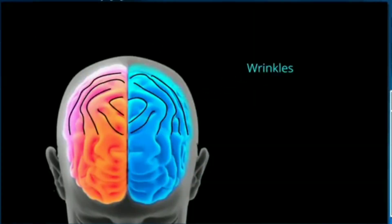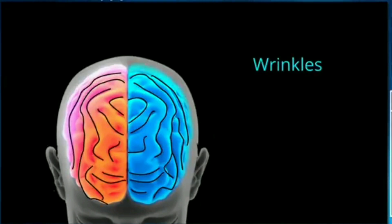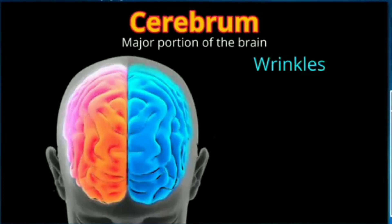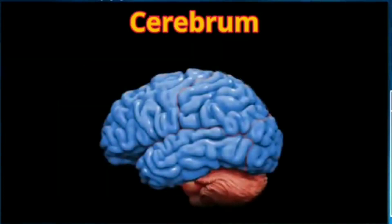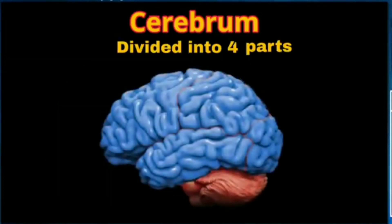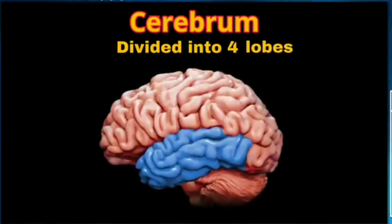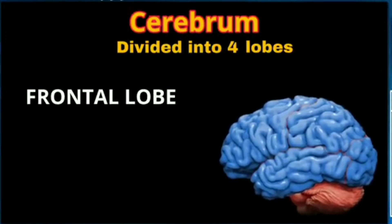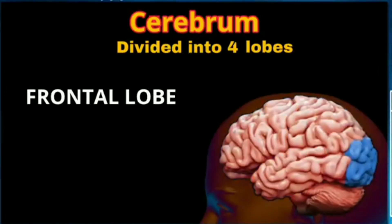Fibers called the corpus callosum. Our brain has wrinkles on its exterior surface, and this wrinkly part is called the cerebrum, which makes up the major portion of our brain. We notice that the cerebrum is actually divided into 4 lobes. The first one is called the frontal lobe. Can you guess which one of these can be called the frontal lobe?